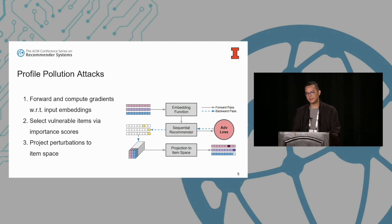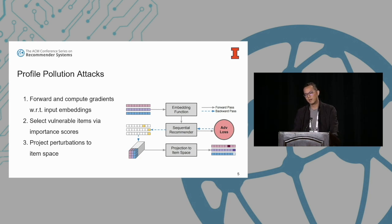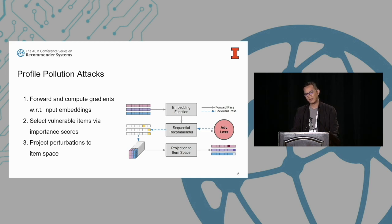The attack algorithm has three steps. First, we forward-pass the clean sequences and compute an adversarial loss with respect to the target items, then trace gradients backward to the embedding space. Second, we select vulnerable items by importance scores — in our implementation, the norm of the perturbed gradients — to find the most vulnerable items in the sequence. Third, we project these perturbations into the item space using cosine similarity, constraining the number of vulnerable items selected and enforcing similarity between adversarial and original items.